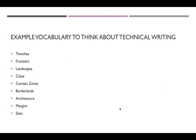Hurley gives us more vocab to think about technical writing, on top of what Walton and Jones and Moore gave us in the previous lecture. She says we might be able to spatially orient ourselves by thinking about technical writing through the ideas of trenches or frontiers, landscapes, cities, contact zones, borderlands, architecture, margins, and sites. Rather than define each one, I just wanted to show you an example of technical writing to think about.